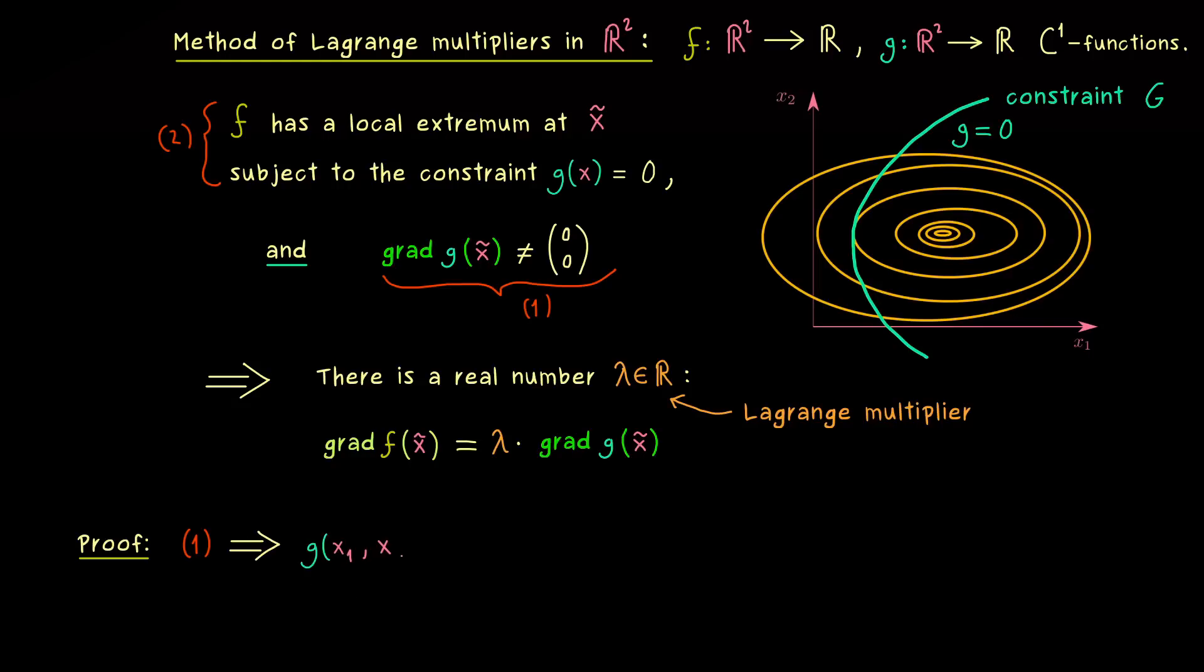And there we see that condition 1 allows us to apply the implicit function theorem for g. So we have that g(x₁, x₂) = 0. And we have that at least one partial derivative of g at this point is not equal to 0. Therefore the implicit function theorem allows us to rewrite this contour line as a graph of a function. At least we have that locally around the point x̃.